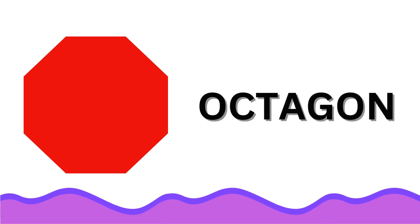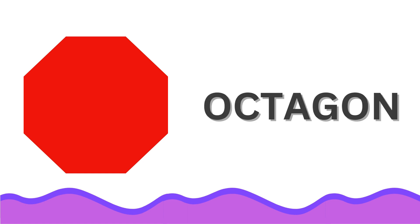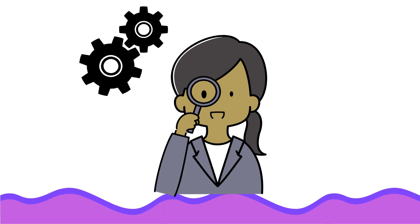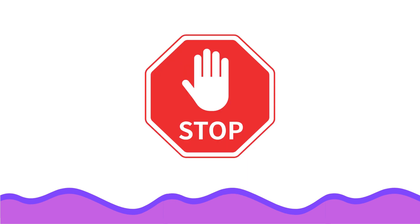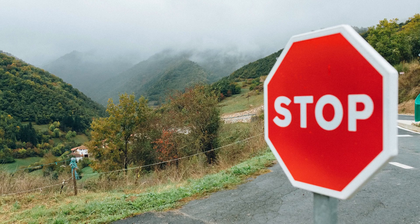The next shape we are seeing is octagon. Can we find some octagon shaped things around us? It's a stop sign. Oh, I have seen them when I go to school.